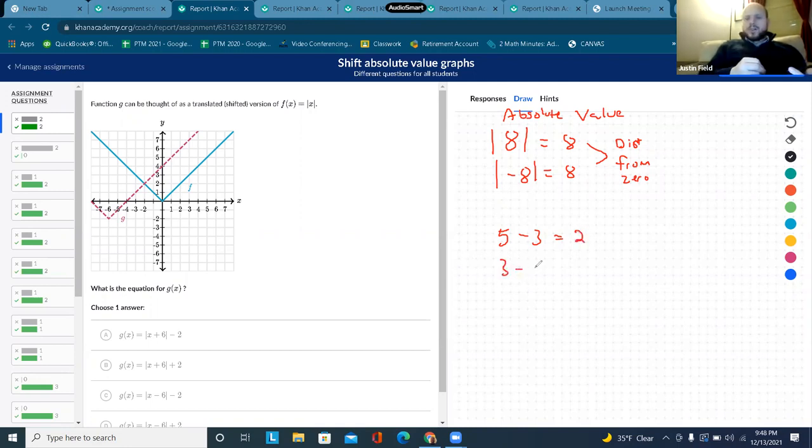But what if you said 3 minus 5? And then you say, wait a minute, does that mean they're negative 2 away? No. Distance is always a positive number. So what we do is we just say, well, don't worry about it. Just take the absolute value. And then you'll get 2 in either case. So that's just a little bit about absolute value.